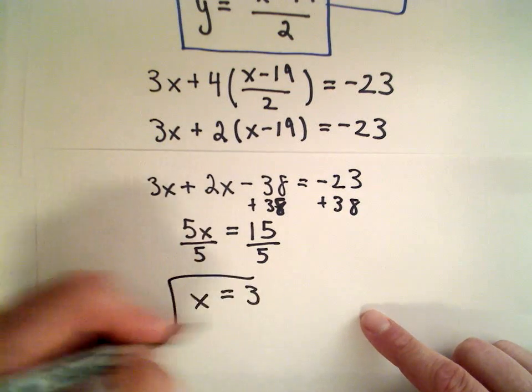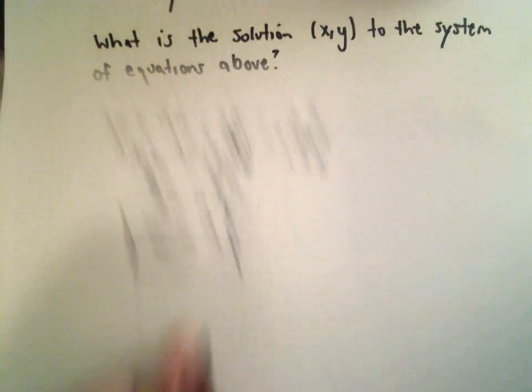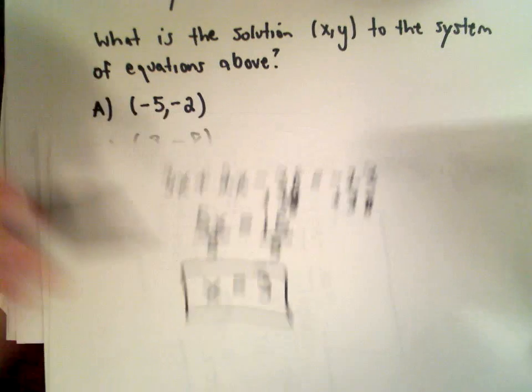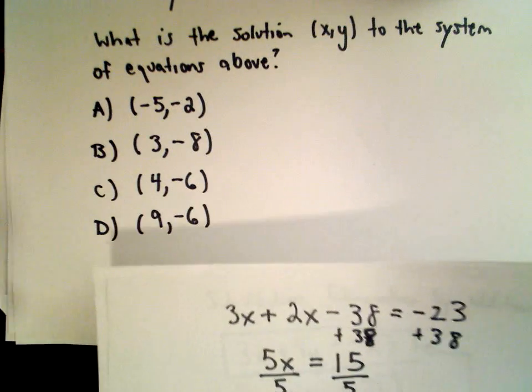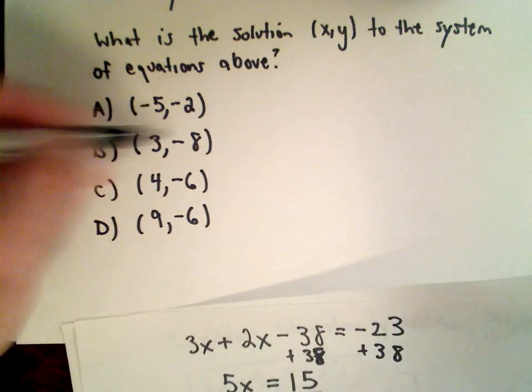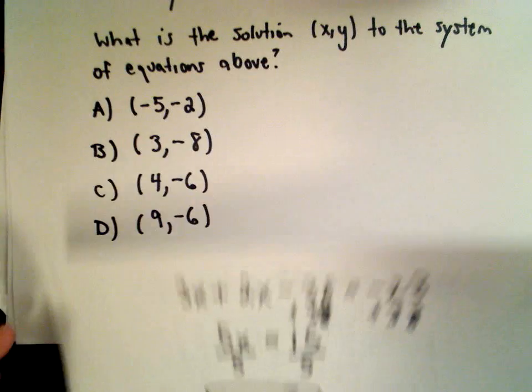If I divide both sides by 5, we get the solution x equals 3. And at this point, just like I said, I wouldn't even bother to solve for y. I would say it's got to be answer choice B because that's the only one that has an x-coordinate of 3. That's just trying to save time on the test, so I would box in answer choice B and be off to the next one.